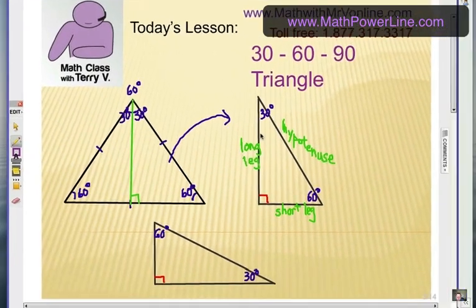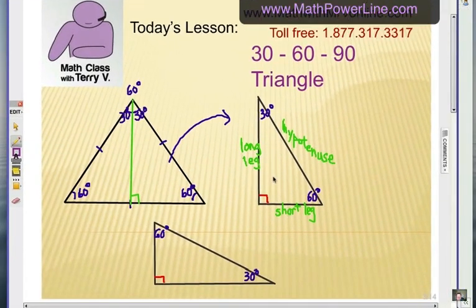With these kinds of triangles, we'll have a short leg, a long leg, and the hypotenuse. The hypotenuse, of course, is the longest side of the triangle. And because it comes from an equilateral triangle, I want you to notice that here is a hypotenuse and the short leg is actually half as much.